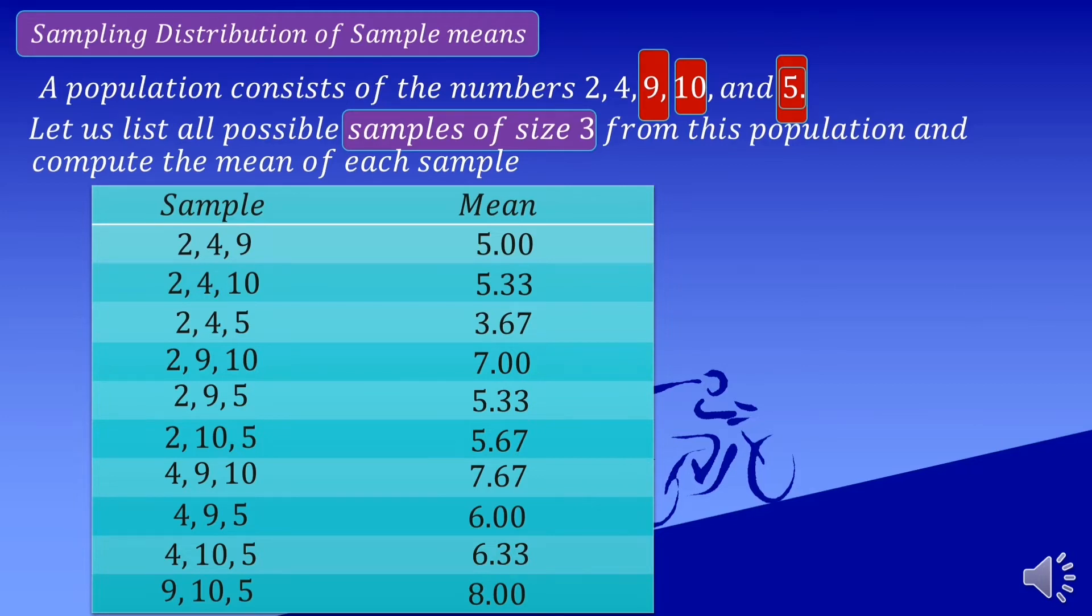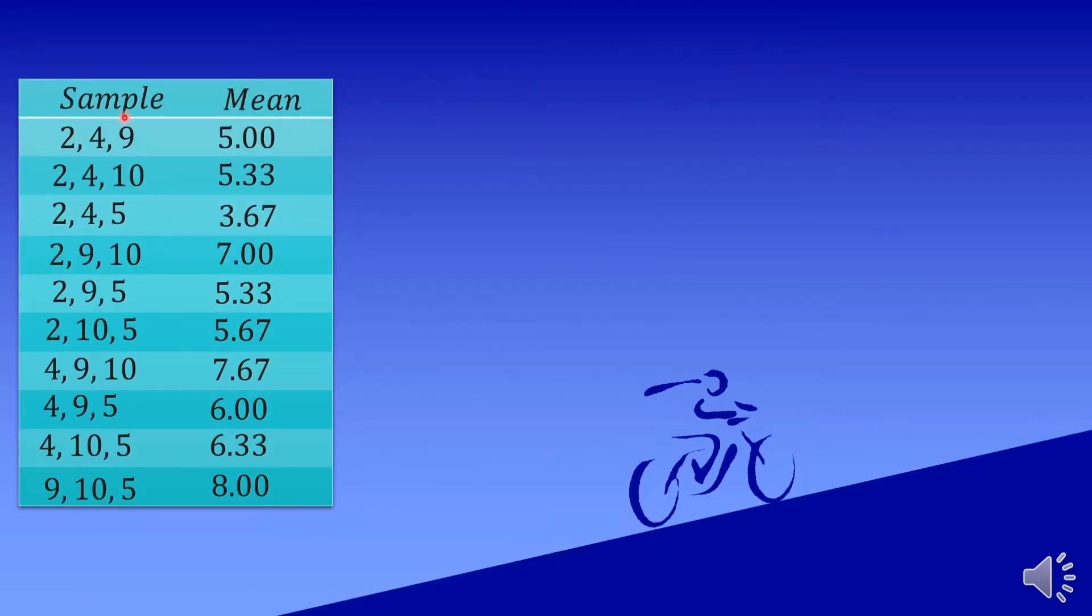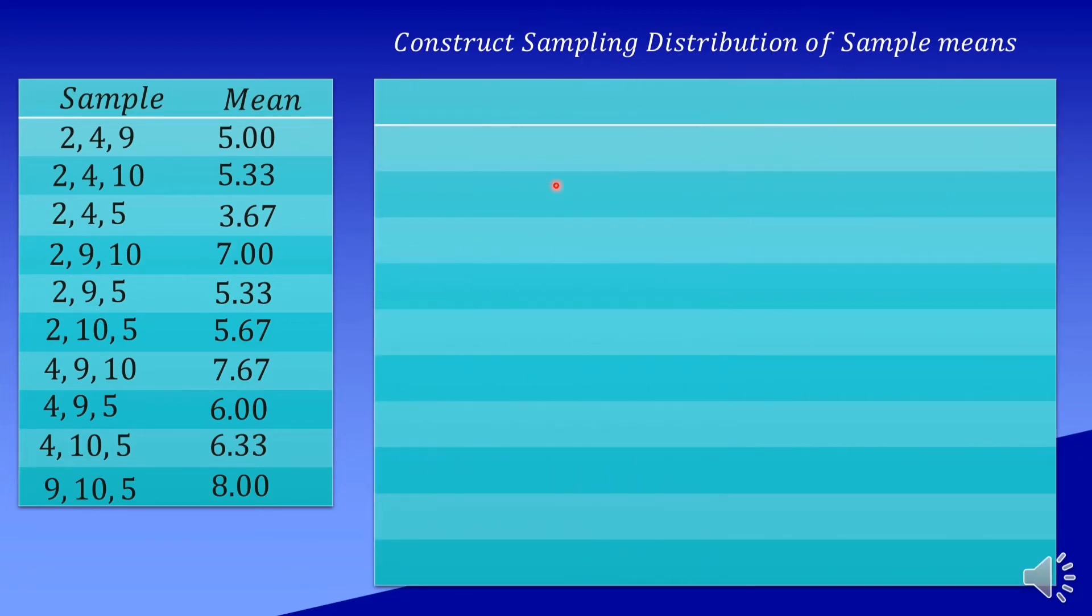We are now listed all the sample size of 3 with its corresponding mean, so we may now proceed to construct the sampling distributions of sample means. We have here the table of three columns: sample mean represented by x-bar, the frequency, and the probability of sample mean also represented by x-bar.